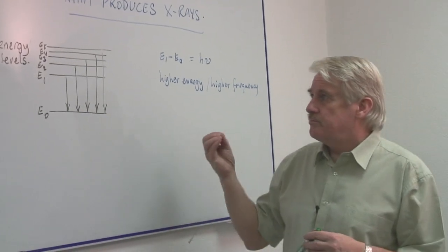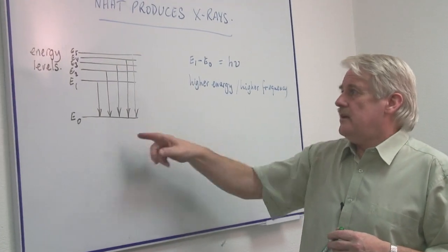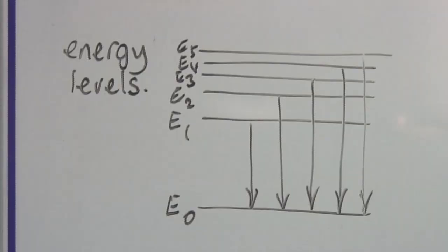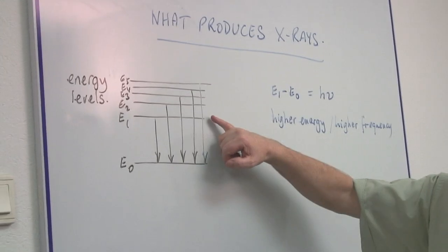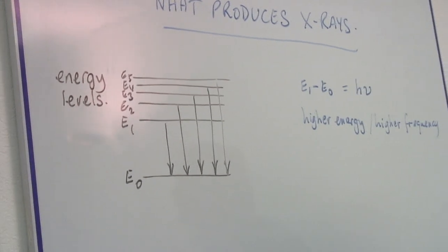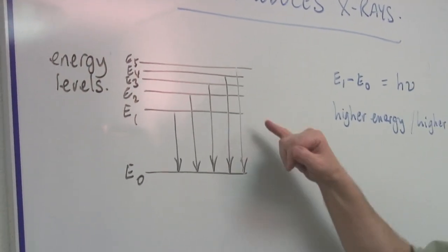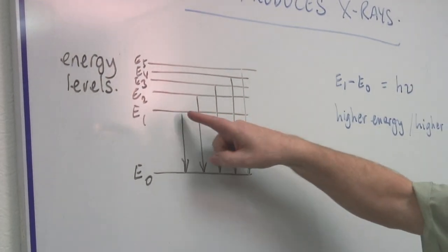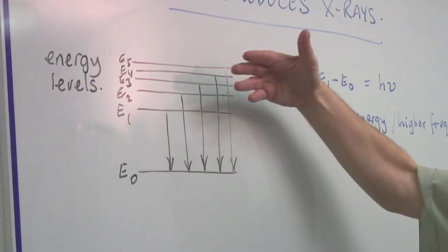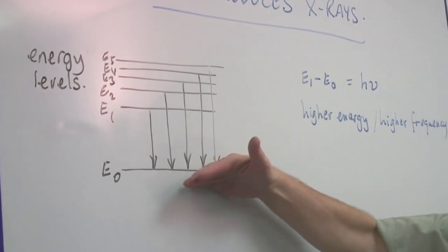X-rays are produced basically within an atom as the energy of the electrons in the atom drop to the very bottom level in it, very often metal atoms, and it's this transition from the higher energy levels of electrons down to the lower energy levels.